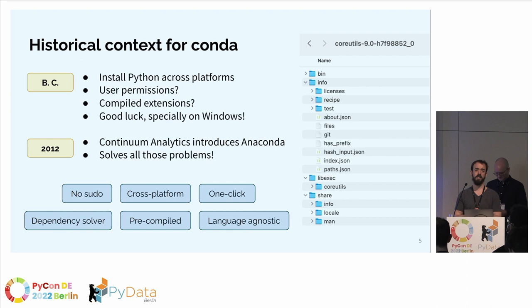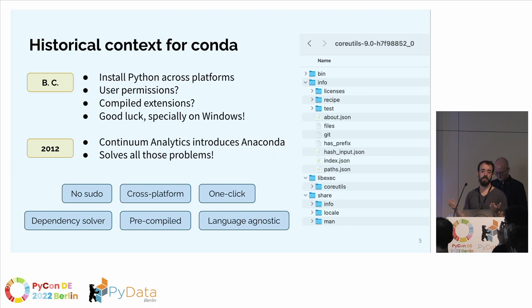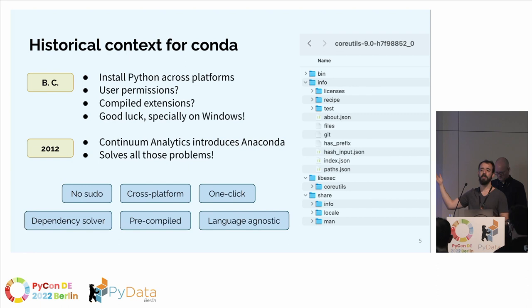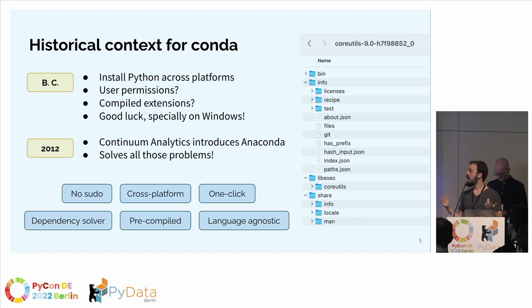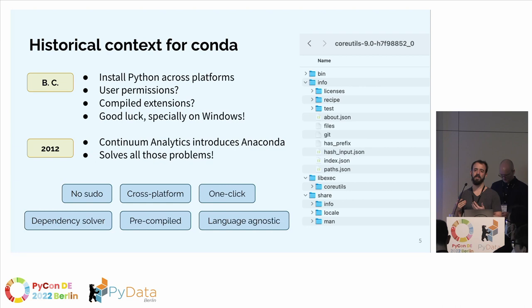The Conda package format was designed around pre-compiled binaries, so you don't have to depend on compilers at all. It's language-agnostic — you can install core utils, all your Unix binaries, with some metadata. No permissions needed. It features a package manager for dependency solving and single-step installation. Back then, pip and PyPI wheels weren't there yet, so installing NumPy or SciPy without compiling was basically not possible.